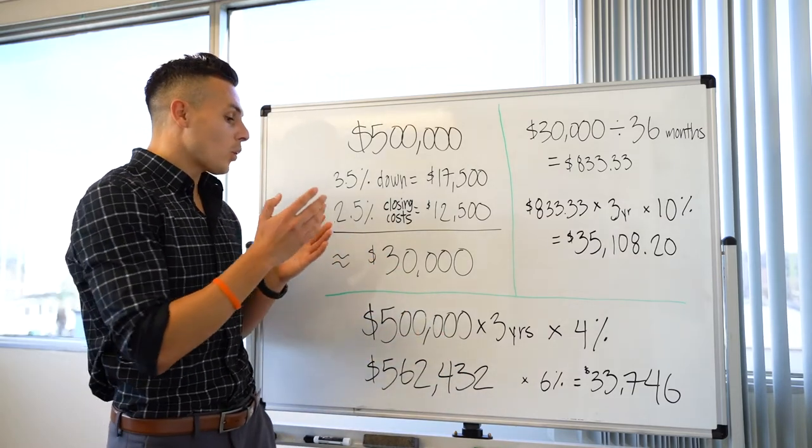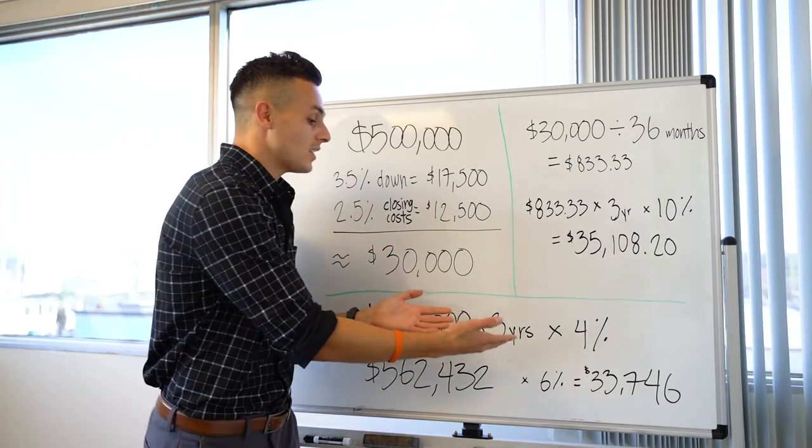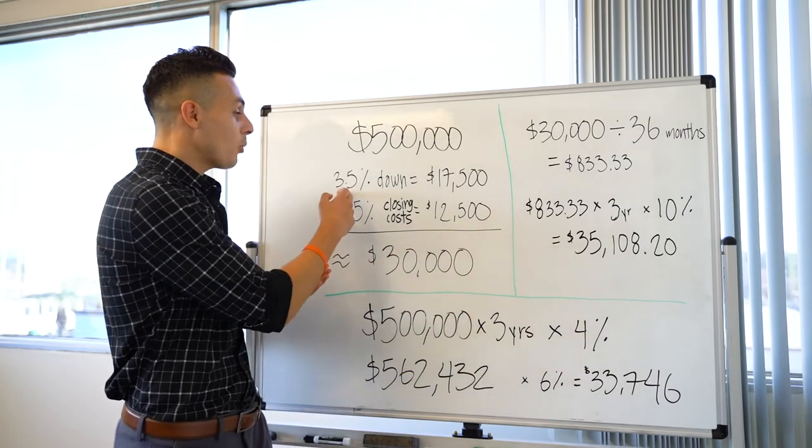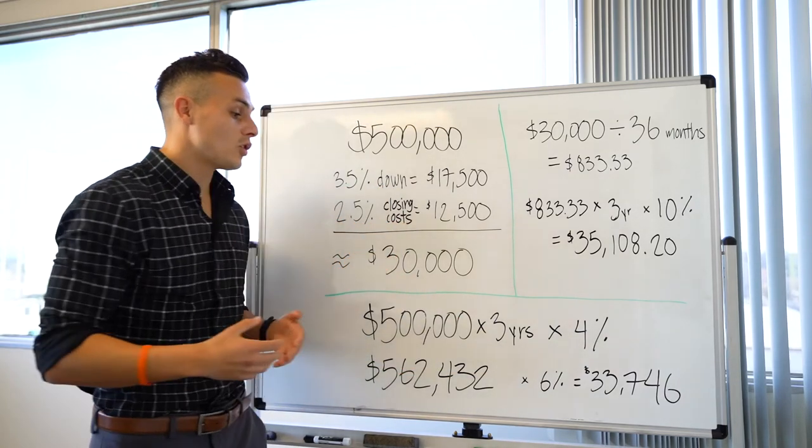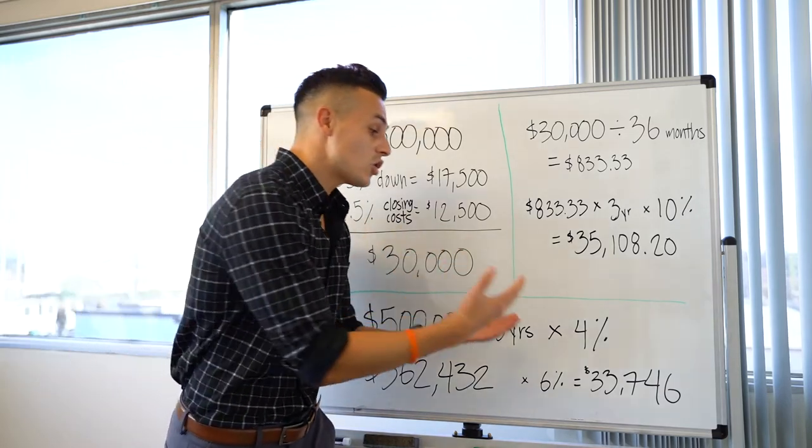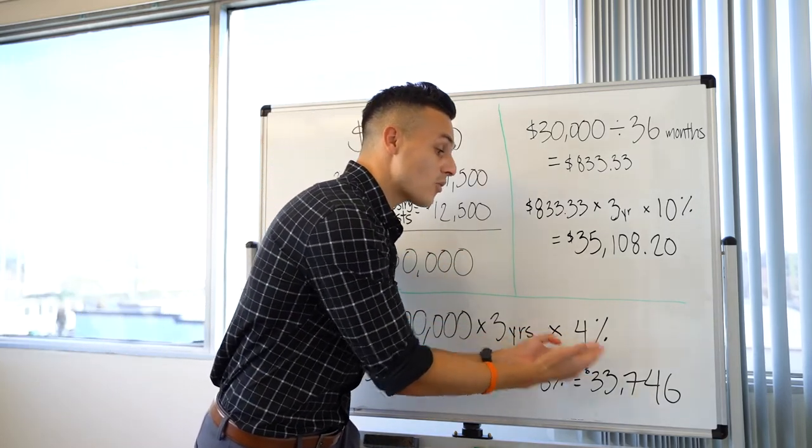Now we're looking at about 6% to save, right? Because it's 3.5% down, 2.5% for the closing cost. So 6% of that is $33,746.